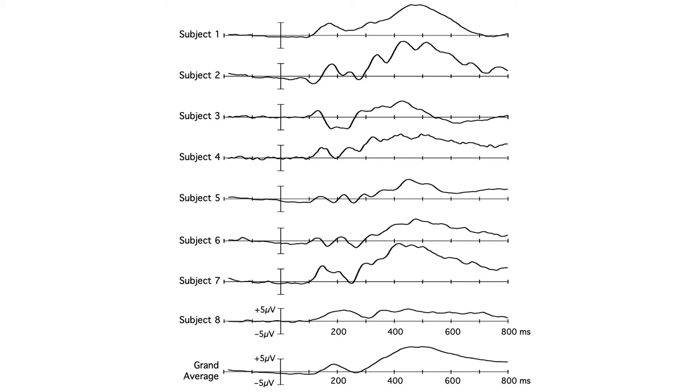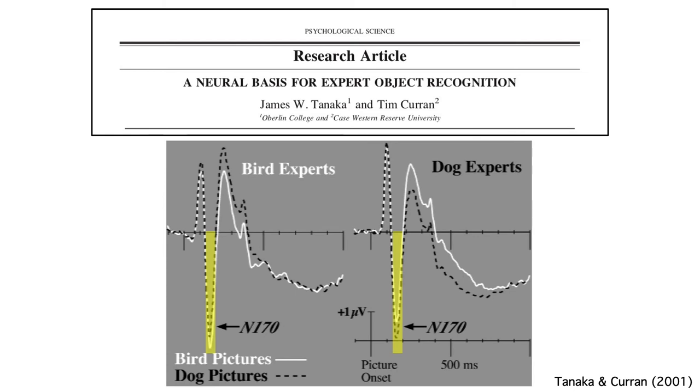However, the statistical analysis is done using the single-subject waveforms, not the grand averages. For example, this study measured the mean amplitude in the N170 time range for each individual subject's average ERP waveform in each condition, and then put those single-subject amplitude values into a simple analysis of variance.